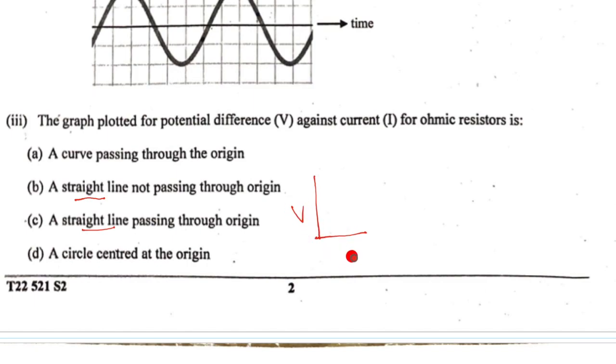Remember if this is V and this is I, the graph will have to be like this. If the graph is not passing through the origin, it will be either this way or this way. Both do not make any sense because this means that the potential difference is there but the current is not flowing